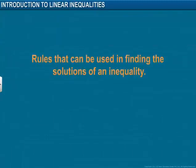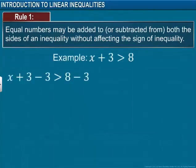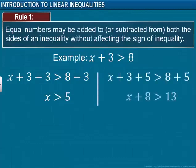We will use some rules that can be used in finding the solutions of an inequality. Equal numbers may be added to or subtracted from both sides of an inequality without affecting the sign of inequality. For example, let's subtract 3 from both sides — the nature of the inequality does not change. This applies for addition also.